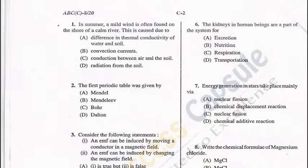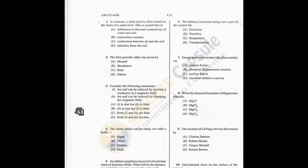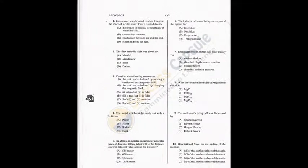Question 1: In summer, a mild wind is often found on the shore of a calm river. This is caused due to the difference in thermal conductivity of water and soil. Land heats up and cools down faster than water. During the day, land is hot and sea is cold, so there is a land breeze; during night, land is cold and sea is hot, so there is a sea breeze. So A is the answer.